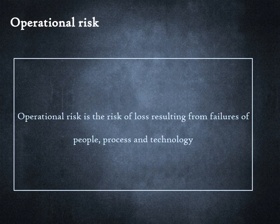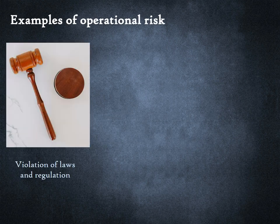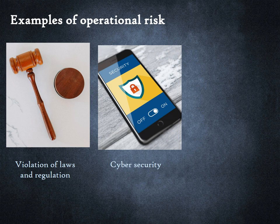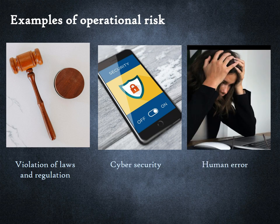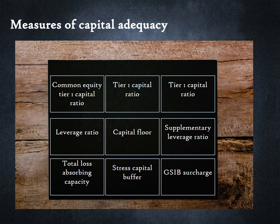Operational risk is the risk of loss resulting from failures of people, process, and technology. Operational risk covers a wide spectrum. Banks can incur losses by breaking laws and regulations applicable to countries they operate in. They can be subject to cyber attacks which can result in both direct loss of funds and indirect loss through costs of remediation. Human error can cause losses — say, sending out funds by mistake. The total regulatory capital banks maintain is thus a sum of the regulatory capital they need to set aside for possible losses from credit risk, market risk, and operational risk. Capital adequacy measurement is a vast topic, and the specific measurements and methodology would vary by country.